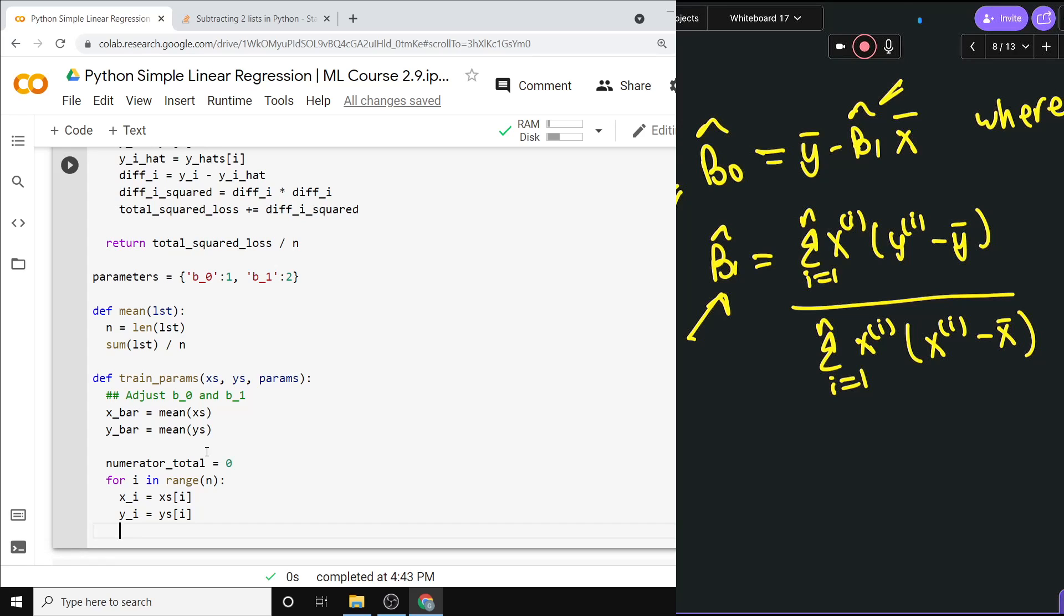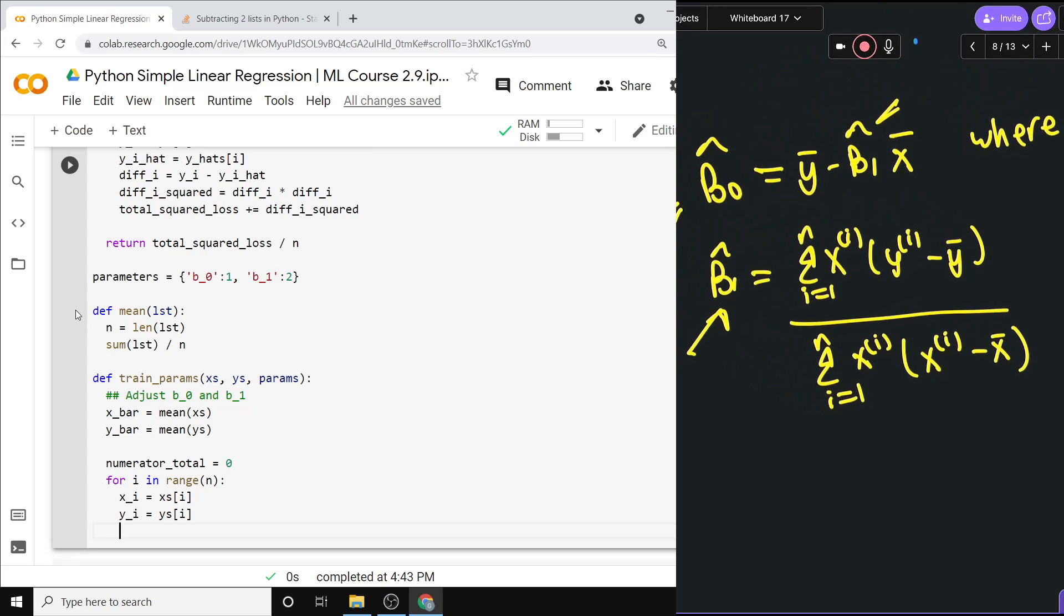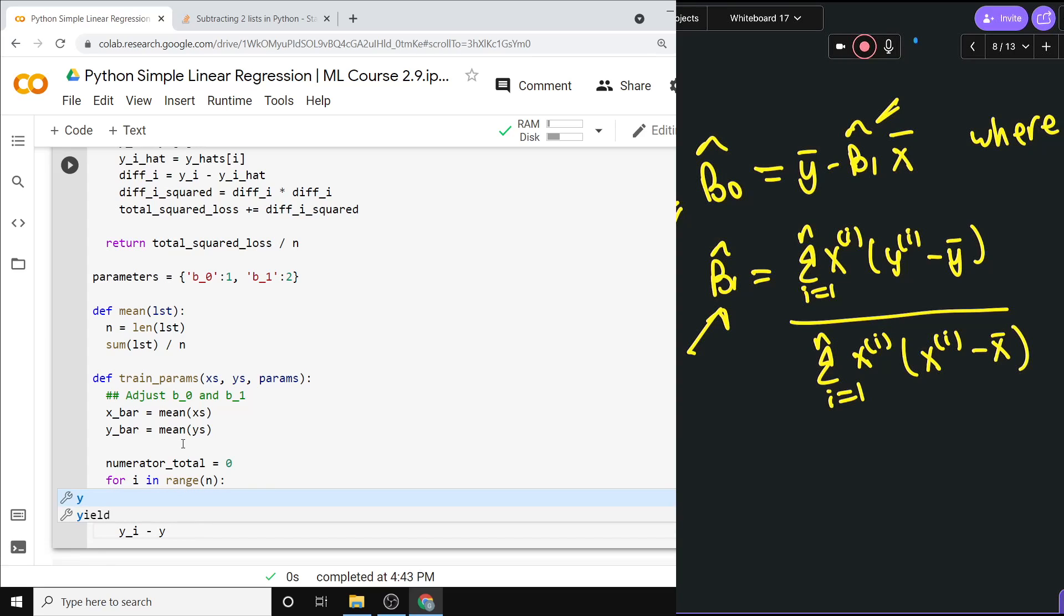And we already have y_bar, so then we can just say that thing in brackets—I'll really point at it to be clear—is the difference between yi and y_bar. The sign of the value here, whether it's positive or negative, matters because we're not squaring it. So here we need yi minus y_bar, and that is going to be denoted as diff_i. It's a different kind of difference than before, but it's still the difference here—it's just yi minus y_bar.